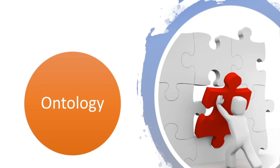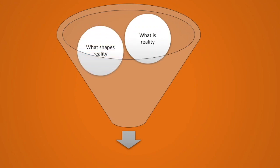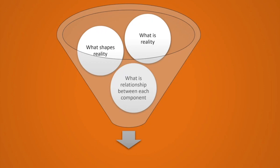Ontology is basically answering the questions: what is reality and what shapes the reality? It tells you about the knowledge and what is happening there. For example, if you are planning to solve any problem, it will give you an idea of what that problem is and what are the possible solutions to that problem.